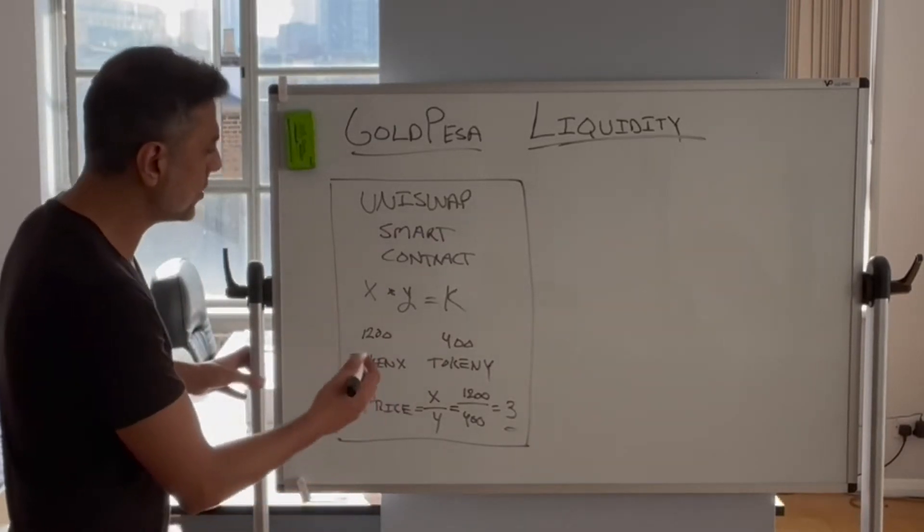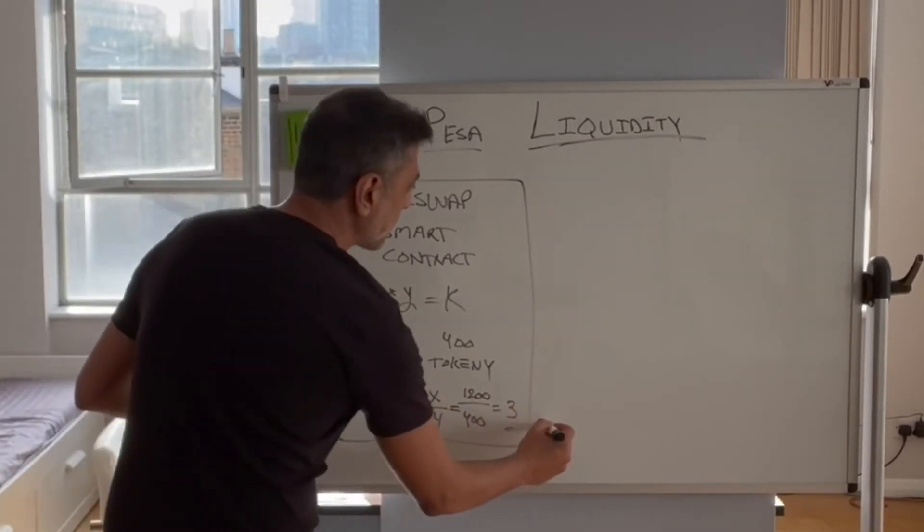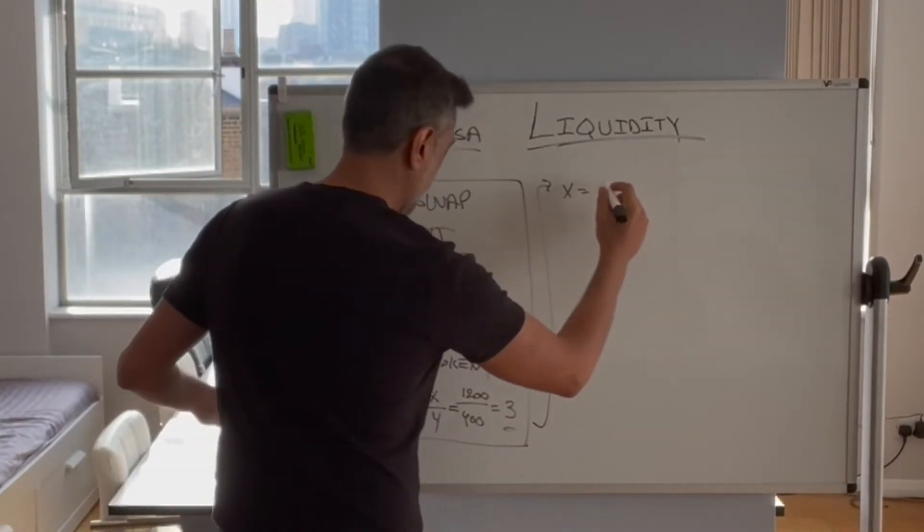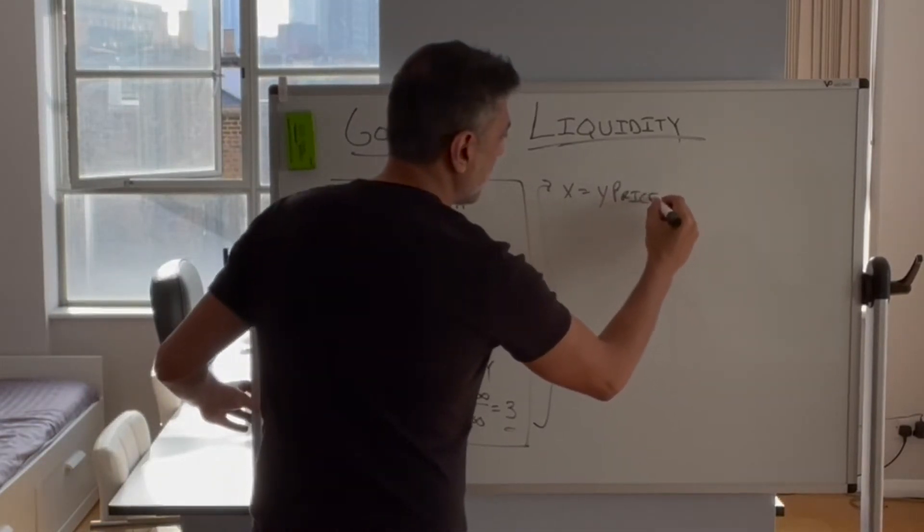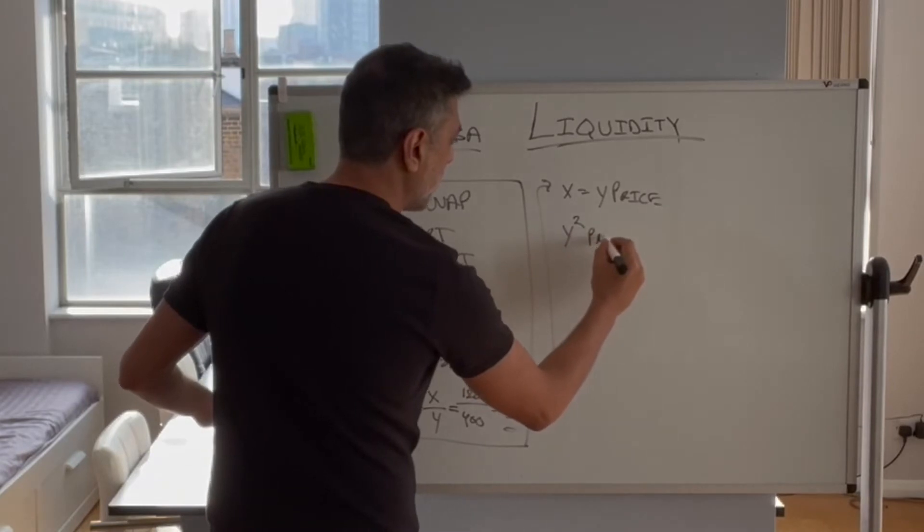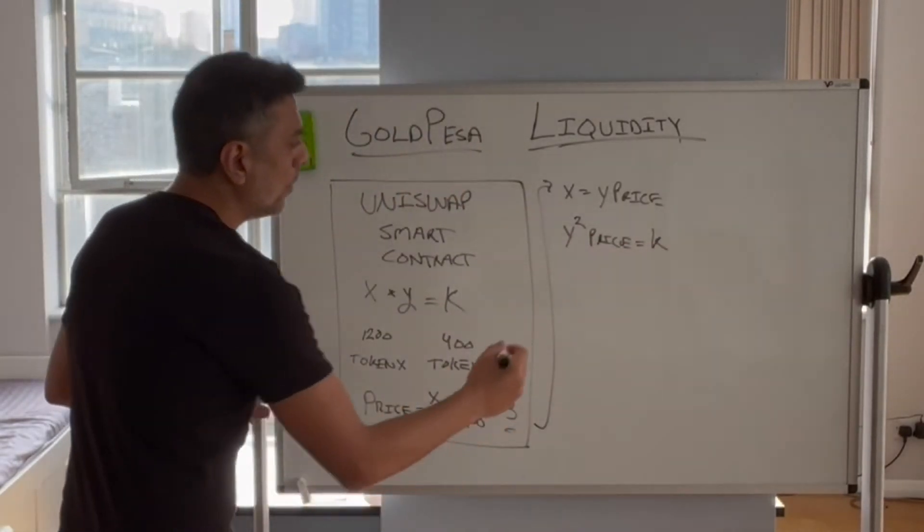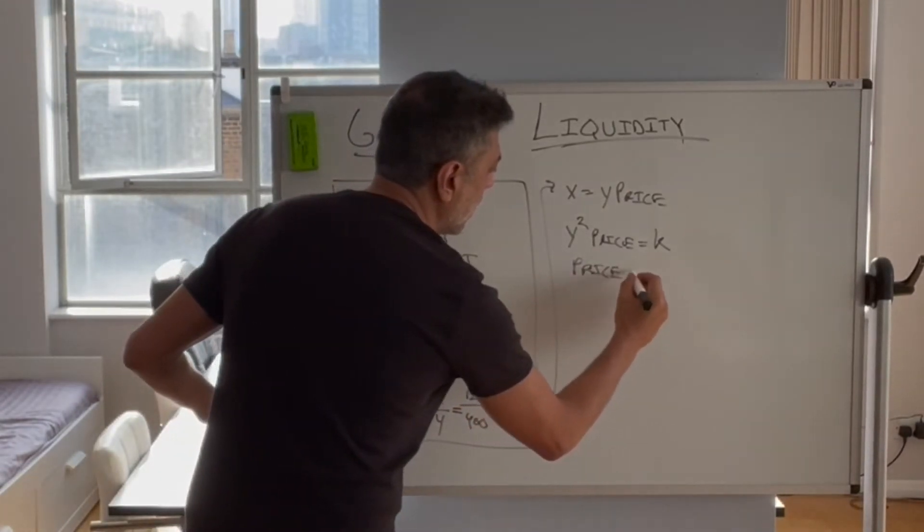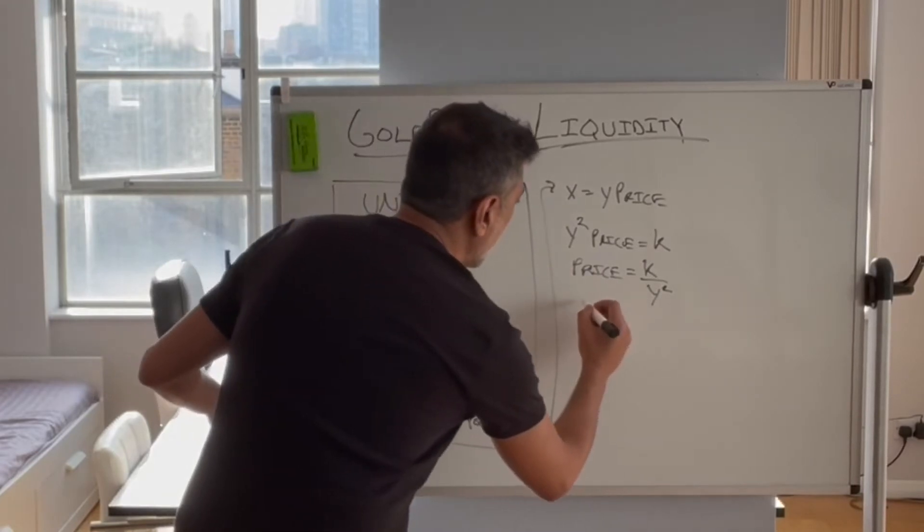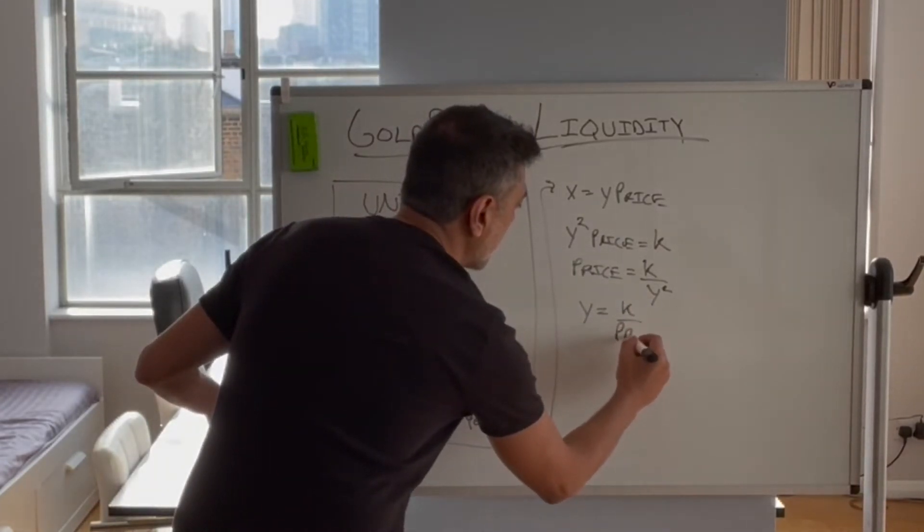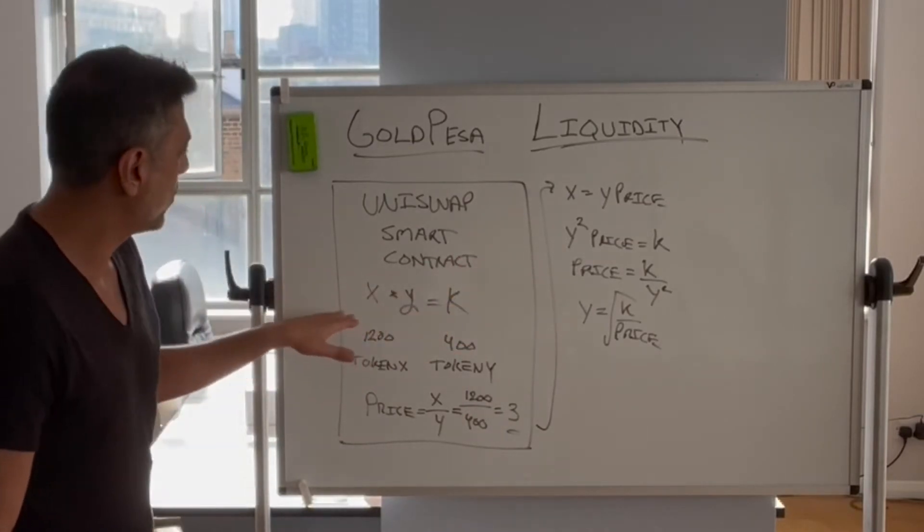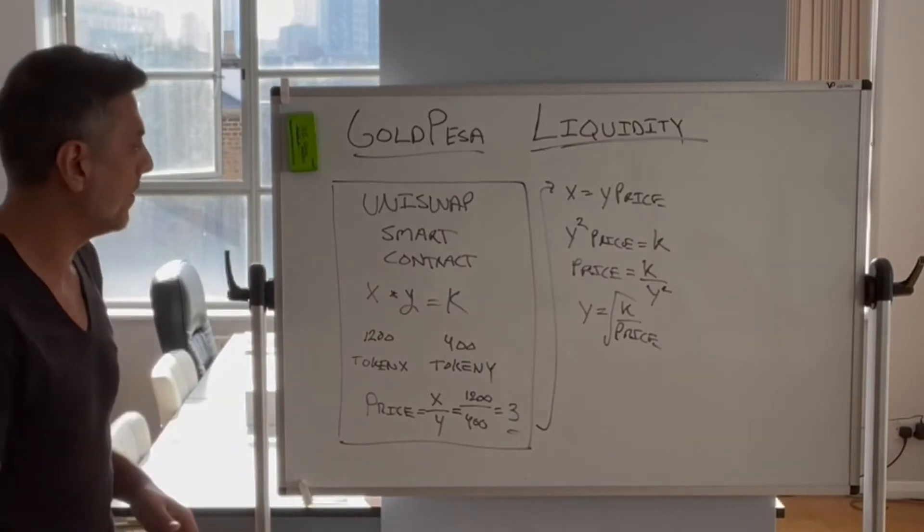Now with some simple math, you can derive variations of what x would be. If x over y equals price, then that means x equals y times the price. We substitute x into here. We effectively have y squared times the price equals the constant, which means that price equals k over y squared. Or another way you can place it is y equals k over price squared root. So you can easily derive various equations to determine the price, given that x and y have changed.